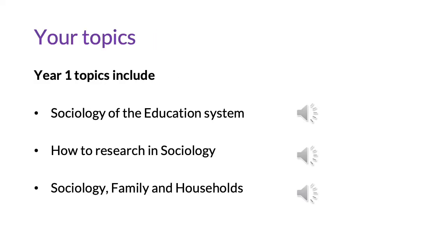Within your first year we study the first three of the six topics that we cover in Sociology. These include sociology of the education system, where we will explore inequalities in education based on class, gender and ethnicity, along with studying the political history of our education system in Britain and whether it creates equality for all.